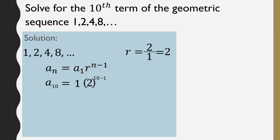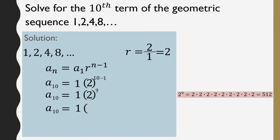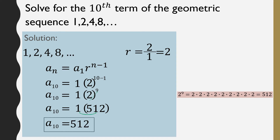Now simplify: 10 minus 1 is 9. Next, we raise 2 to the power of 9, which is 2 multiplied by itself 9 times, and that equals 512. The last step is to multiply 512 by the first term, which is 1, giving us 512. So the 10th term is equal to 512.